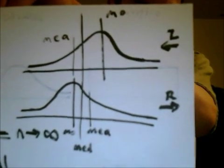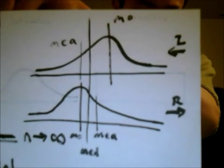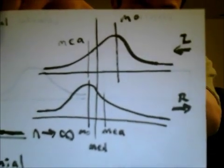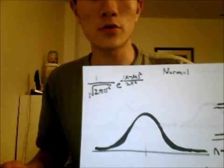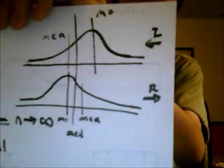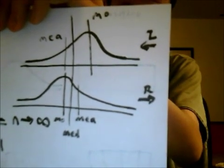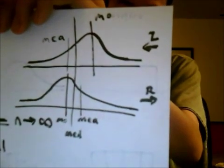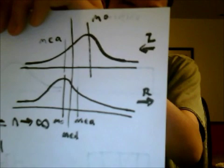These two are skewed normal distributions. The top is left skewed, meaning that the left tail is longer. The bottom is right skewed, meaning that the right tail is longer. In a normal distribution, the mean, median, and mode are the same. In a skewed distribution, the mean is pulled by the tail more than the median, which is pulled more than the mode. Therefore, the three values will be different.